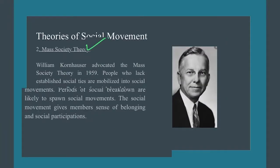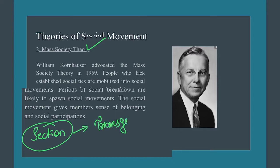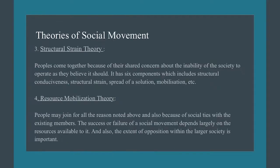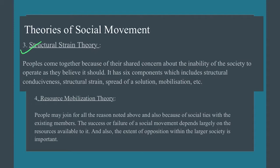The Mass Society Theory, propounded by William Kornhauser, explains that if a section of the population is continuously stigmatized — for example, transgenders across the West — they have been denied social ties for a long time and subjected to stigma. The social movement gives members a sense of belonging and access to societal participation. Movements by transgenders demanding rights are an example of the Mass Society Theory.